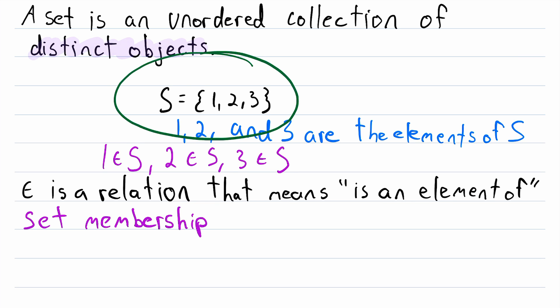Can you think of an object that is not an element of S? An easy one that comes to mind is the number 4. 4 is not an element of S, and we can write that like this. This just uses the set membership symbol with a strike through it. So that's what elements of sets are. They are the distinct objects that a set contains.